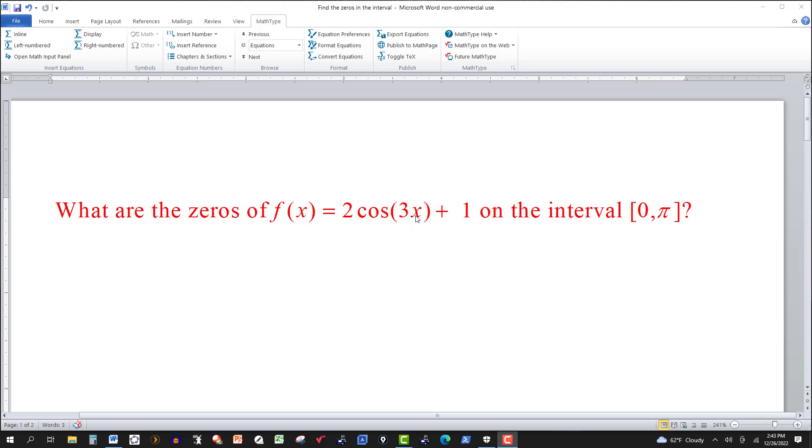I plug in 0 where the x is. We get 2 cosine of 0. The cosine of 0 is 1, 1 times 2 is 2, plus 1 gives me 3. I don't get a 0.